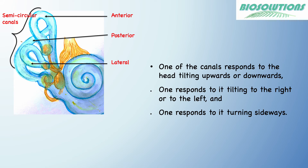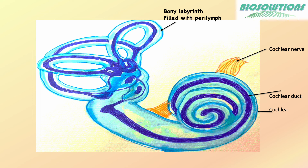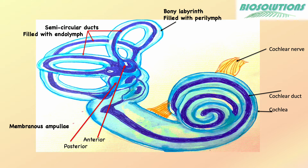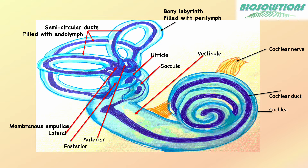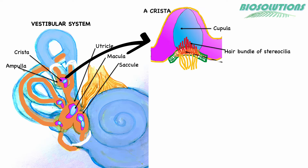Semicircular canals filled with endolymph end in an expanded structure called the ampulla, with sensory hair cells. All canals and ampulla open into the utricle. The saccule, or otolith organs, also called gravity receptors, are present just below the utricle and respond to gravitational forces. The macula is a patch of sensory hair cells on each saccule.